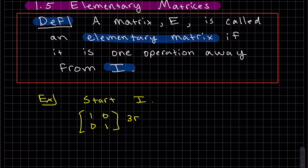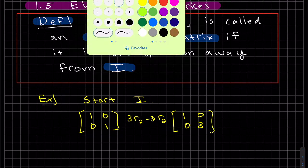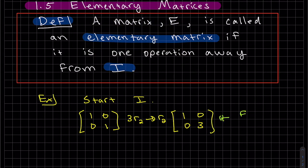Let's do three row two to row two. That's an elementary operation as we learned in the other video and we know we get that and that is our elementary matrix.